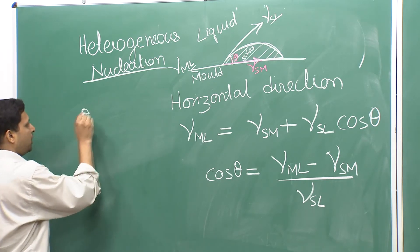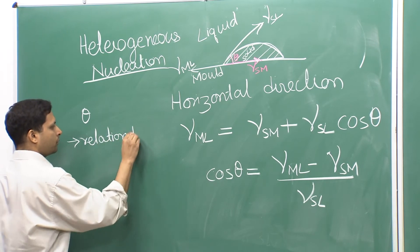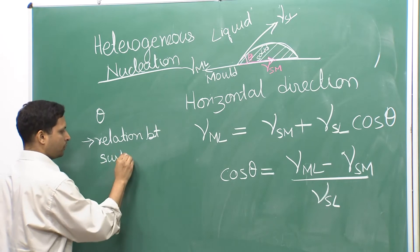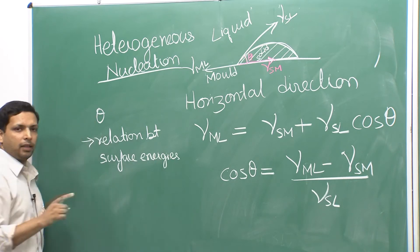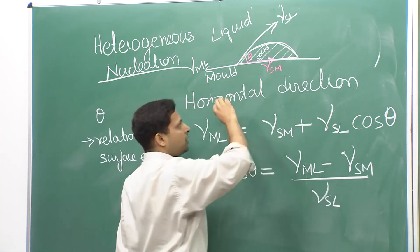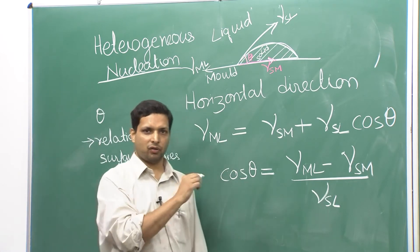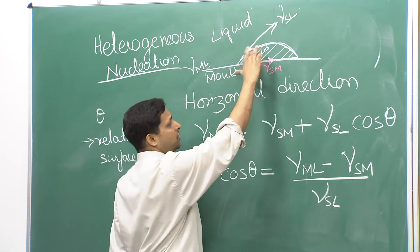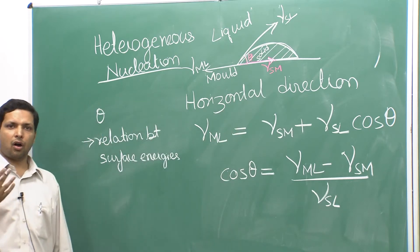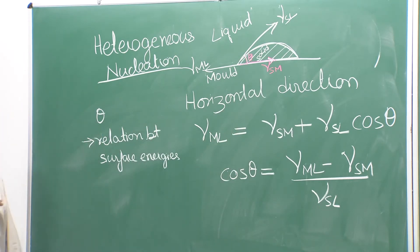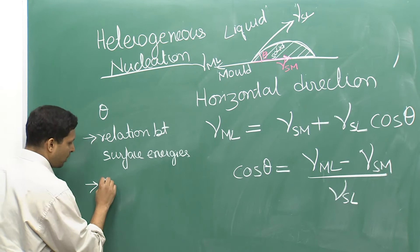Another thing: θ also represents a relation between the geometry. We have assumed a shape which is a part of a sphere — a spherical cap. So θ is also telling us what fraction of that sphere is actually present, meaning θ is related to the geometry of the cap.